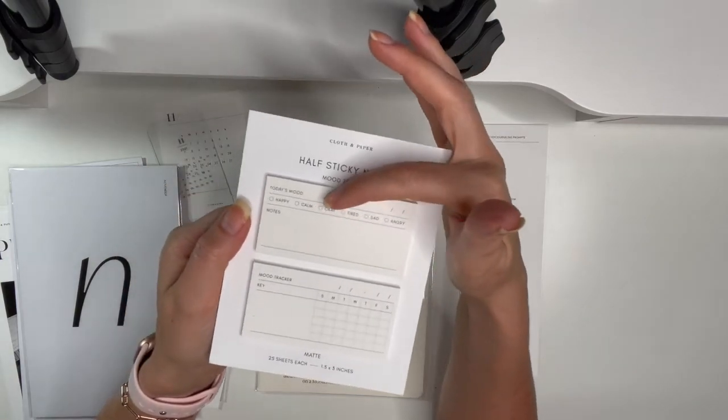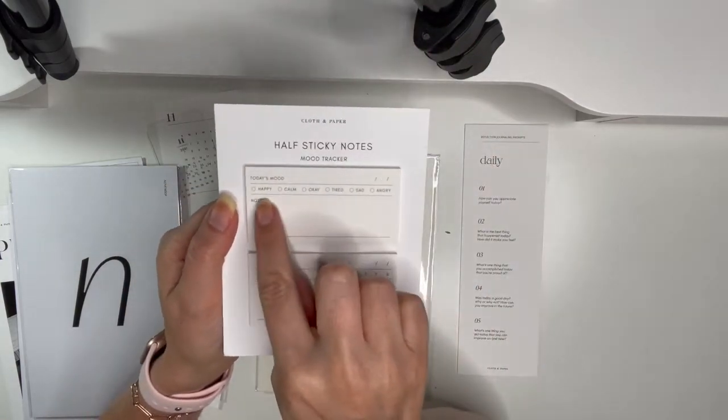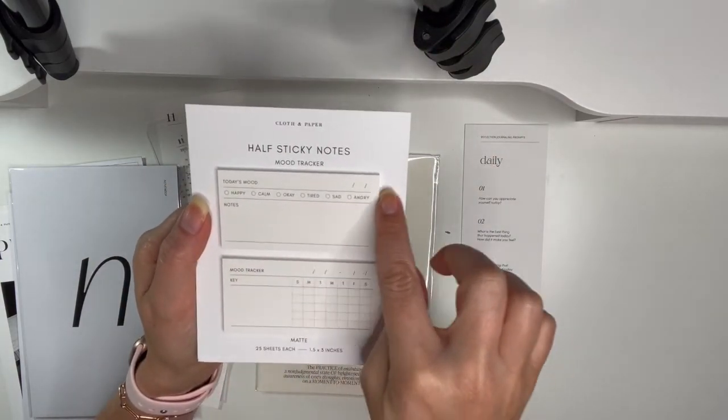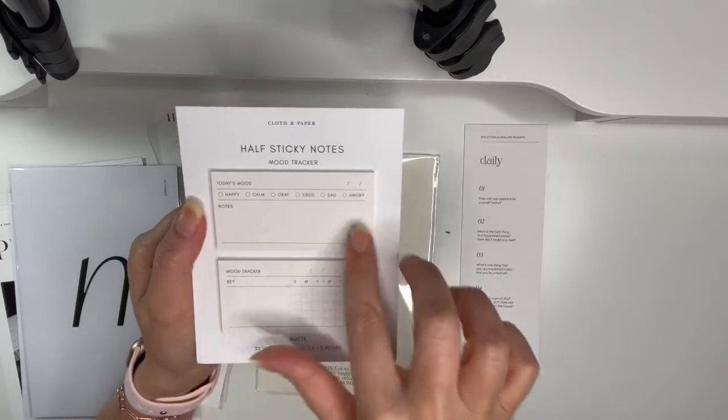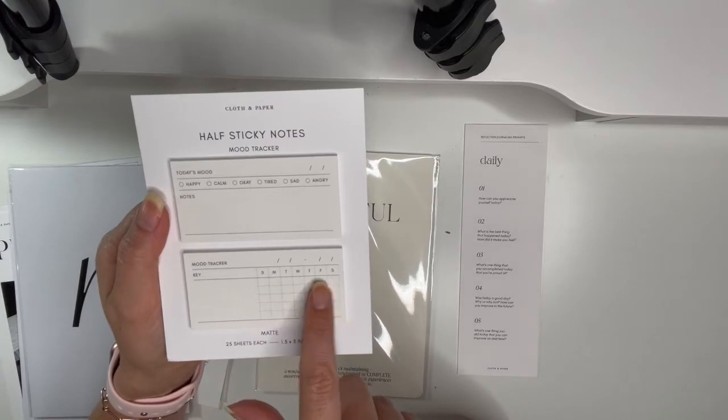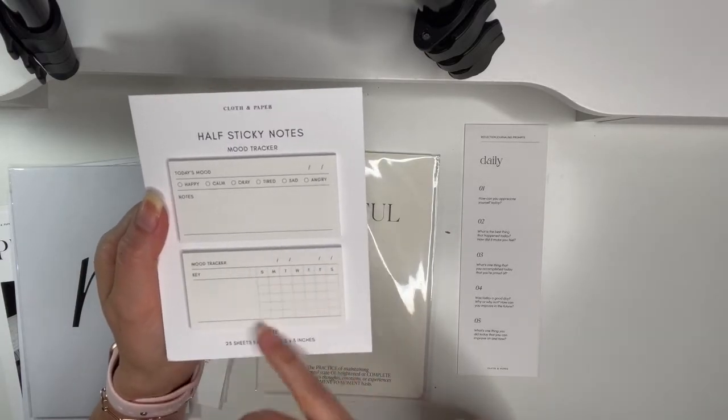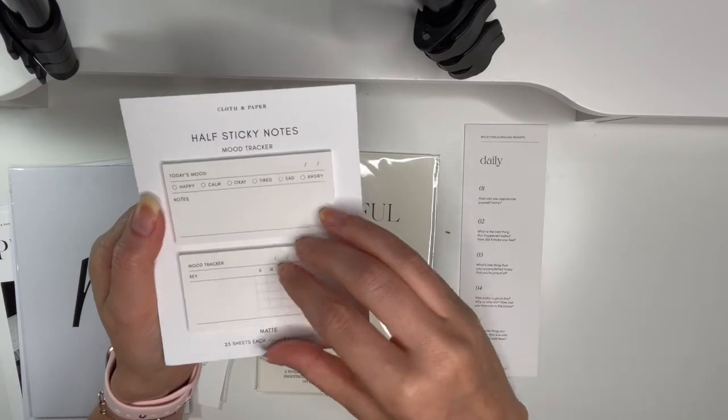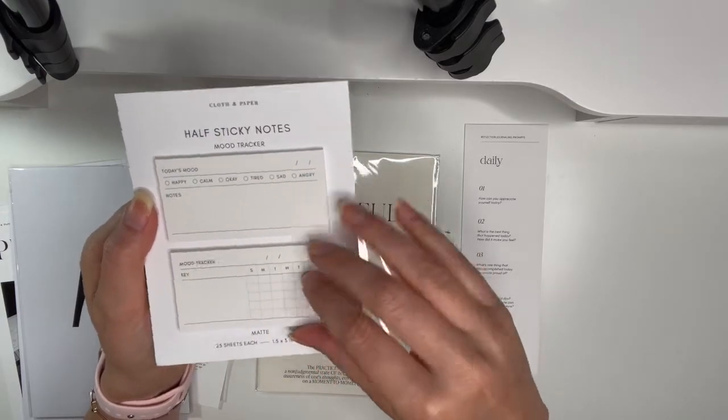So for this one here, it says today's mood, so you check it off: happy, calm, okay, tired, sad, and angry. You put a date there and then notes. And then there's a mood tracker so Sunday to Saturday, put the week in there. That's pretty neat and they're sticky notes, you just put it in your planner.